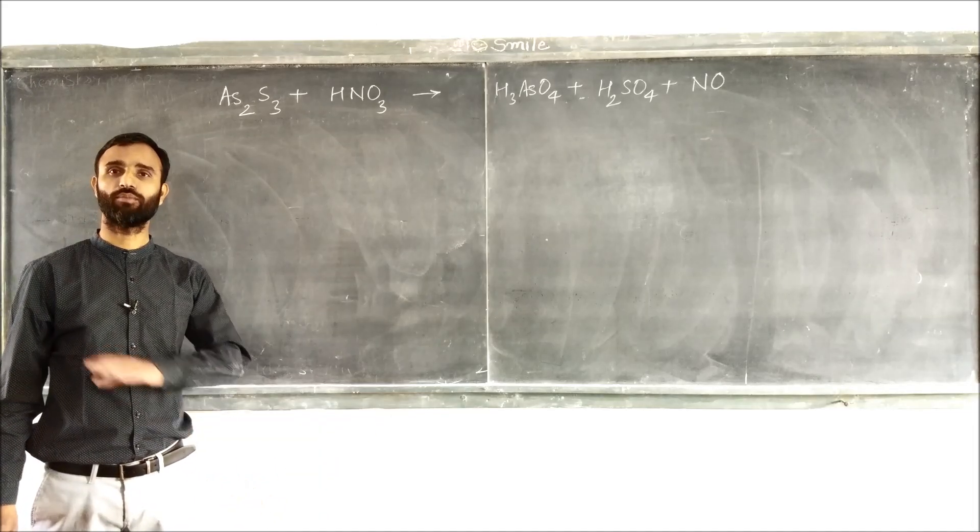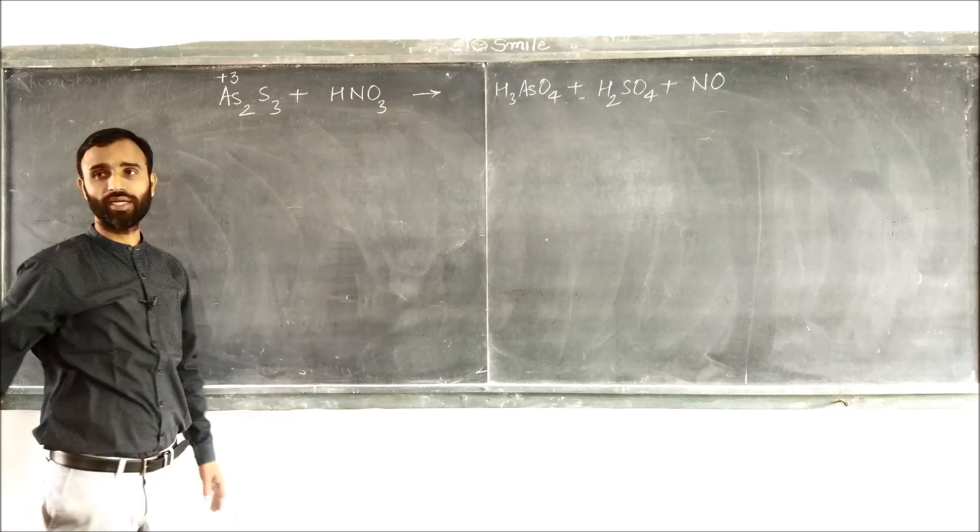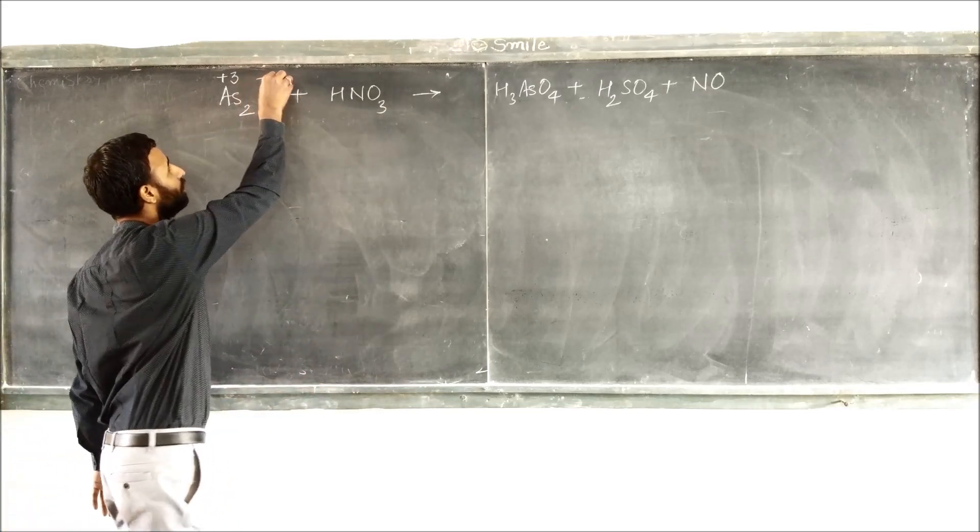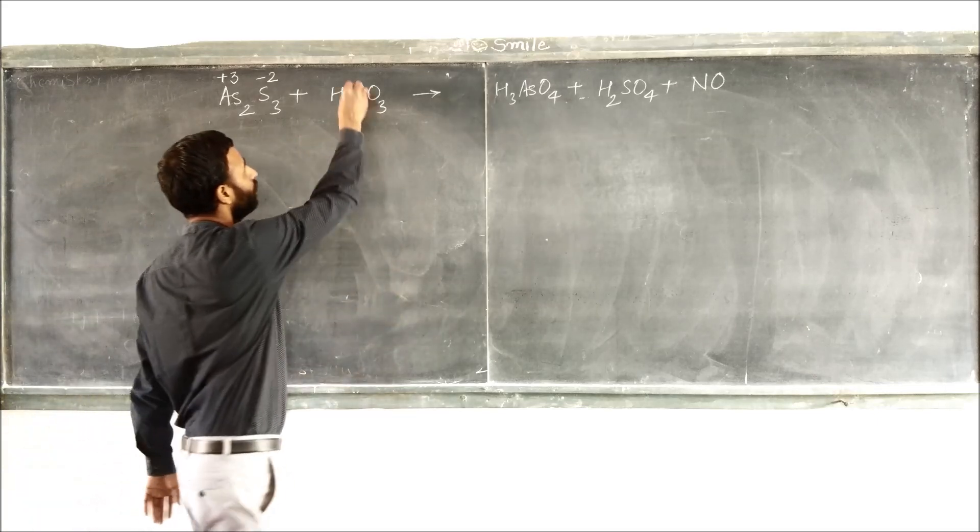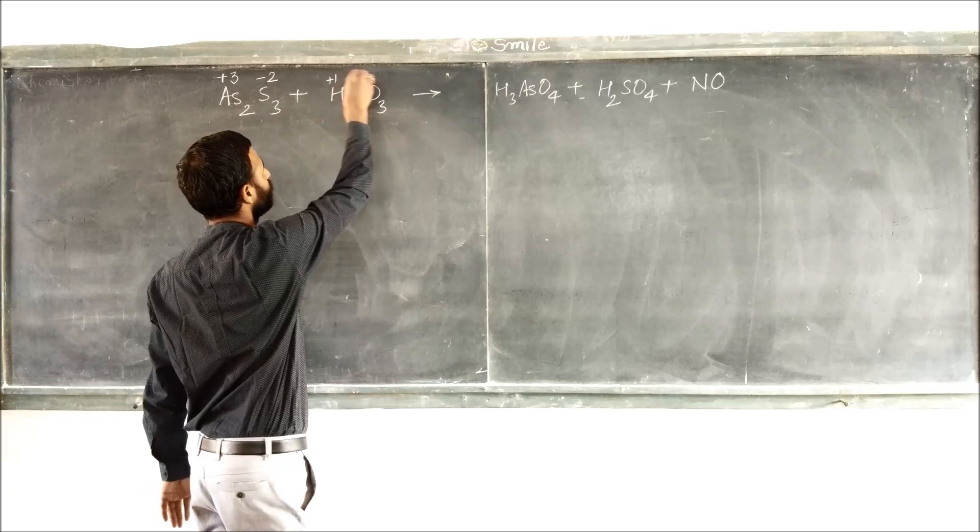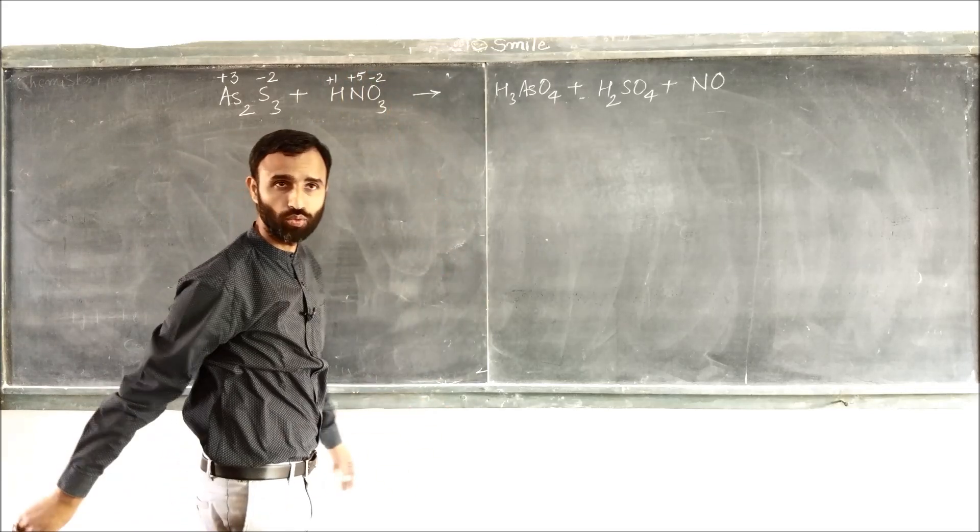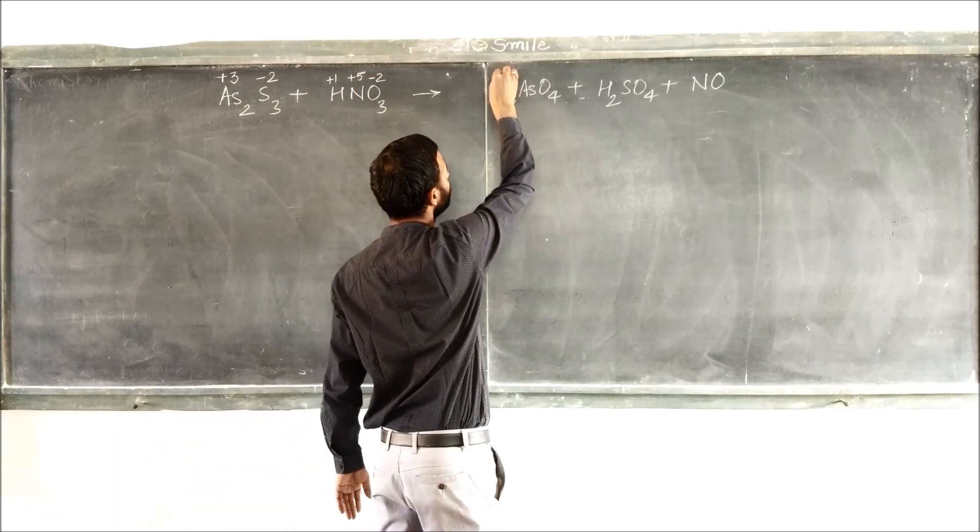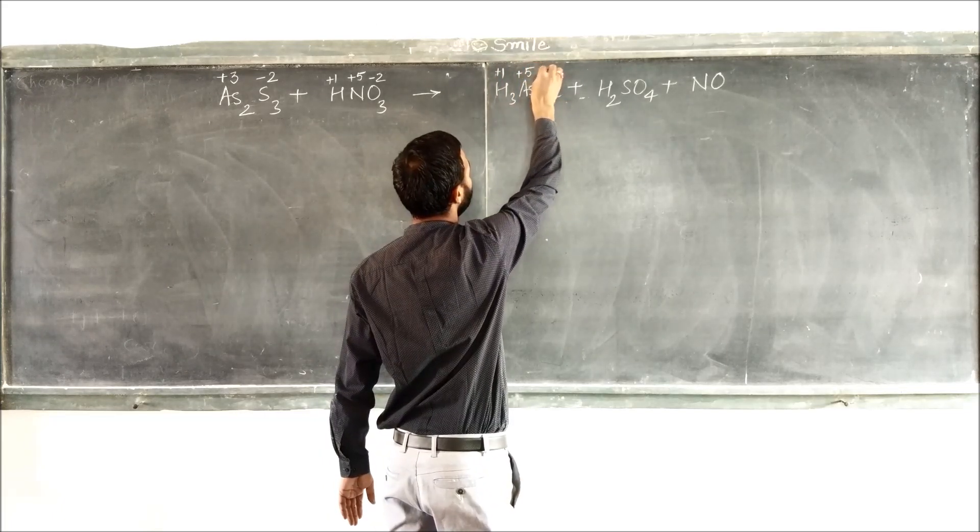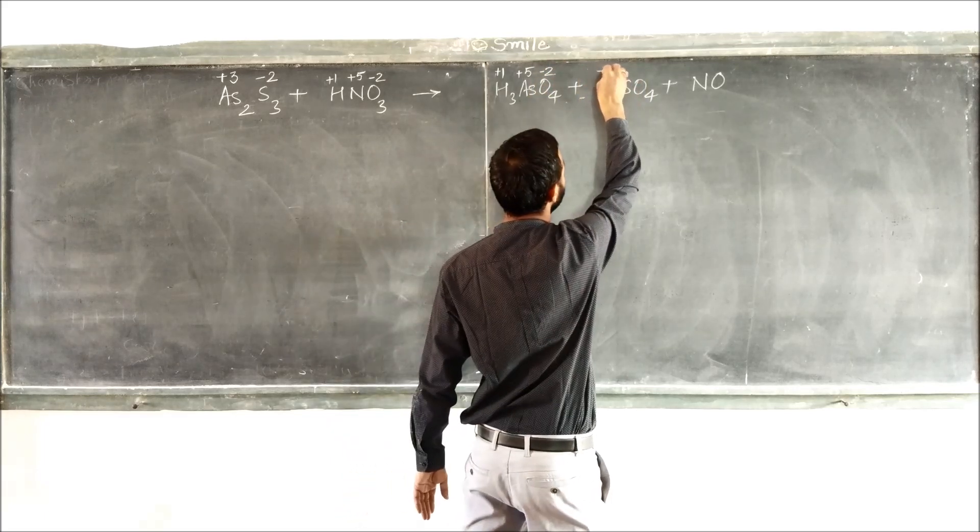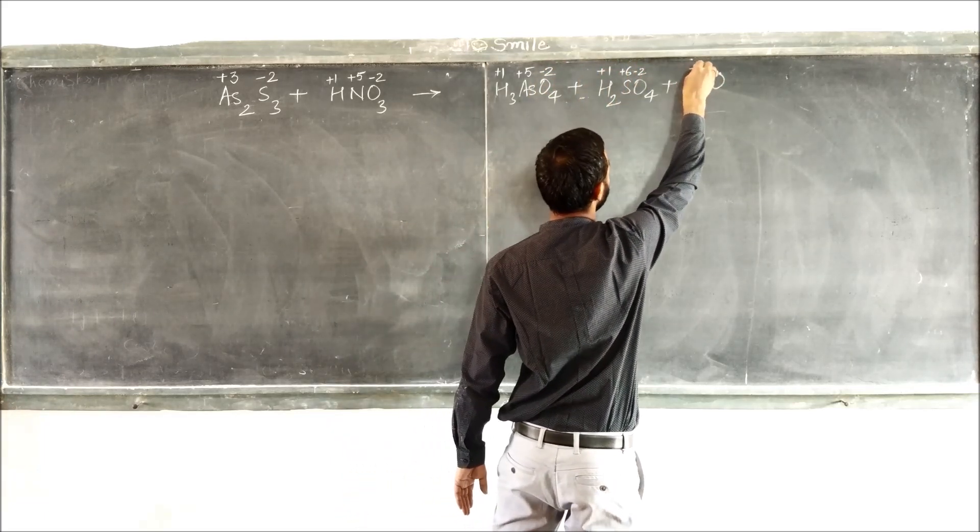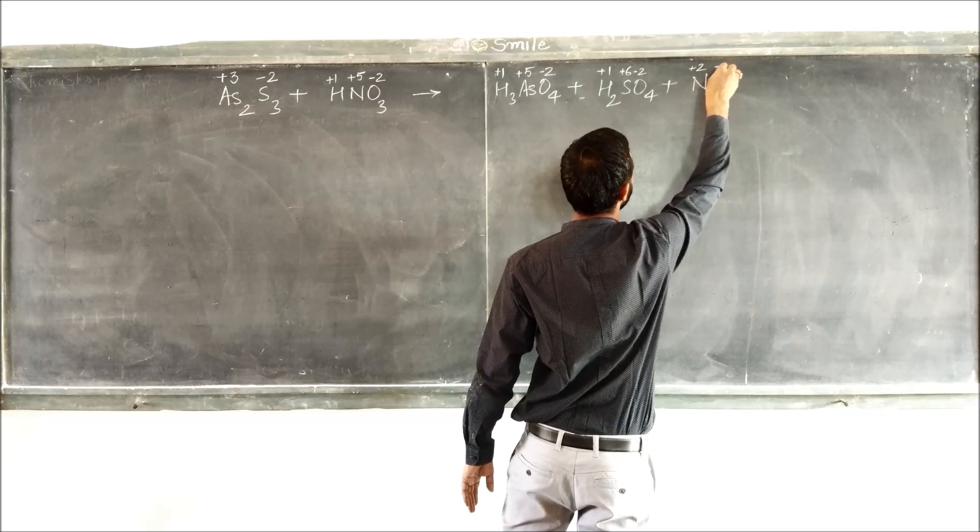First write down the oxidation number of each atom. Arsenic is plus 3, sulfur is minus 2. Nitrogen is plus 5, hydrogen is plus 1, oxygen minus 2. There it is: plus 1, plus 5, minus 2. Plus 1, plus 6, minus 2. Plus 2, minus 2.